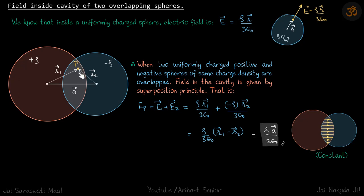Because they are overlapping, we can use the principle of superposition and calculate individual electric field due to each sphere, and then do the vector sum of that.